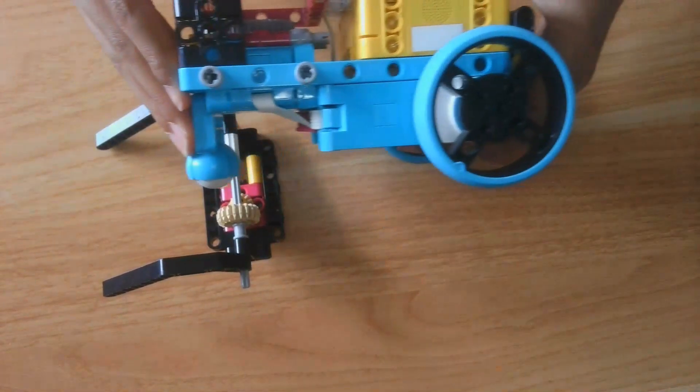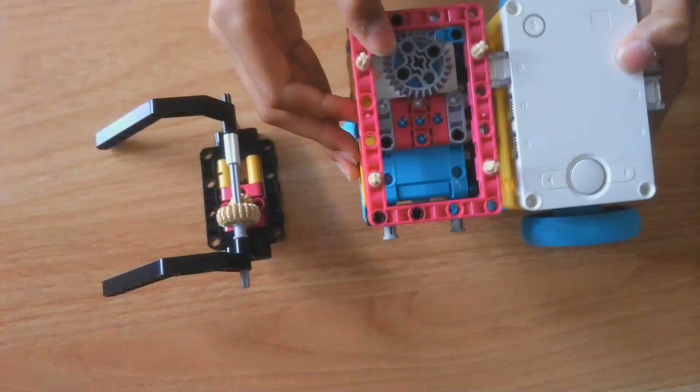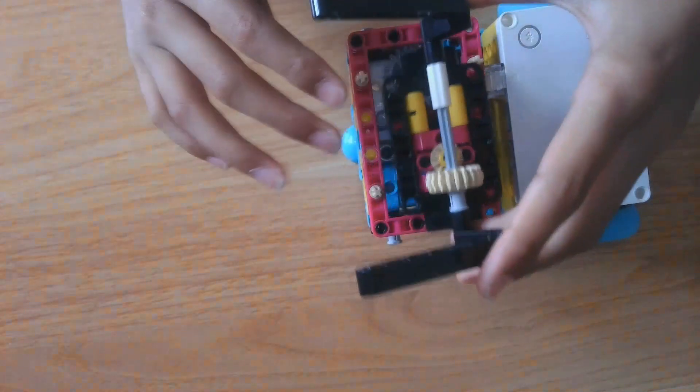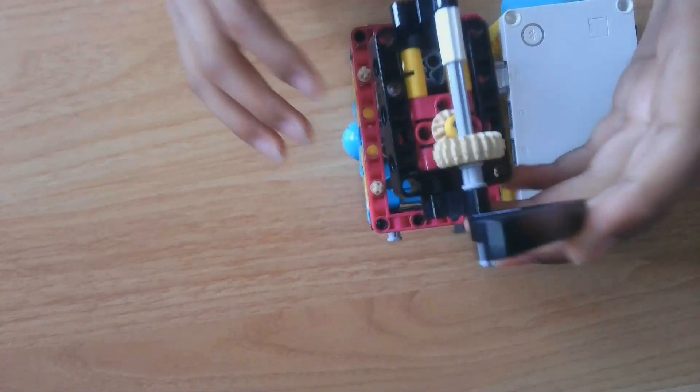We have used two small Spike Prime motors, two small Spike Prime wheels, and we have one frame so we can make slip-on slip-off attachments like so. One, two, you can just take it off so easily, they're slip-on slip-off.